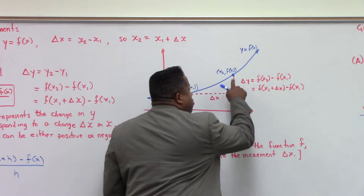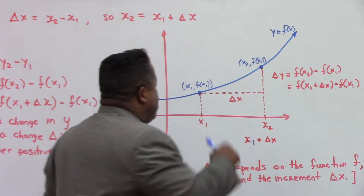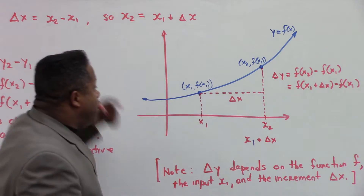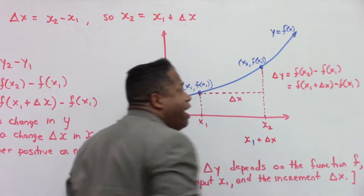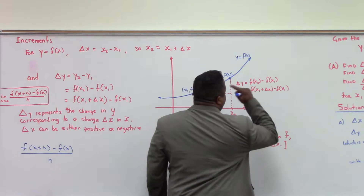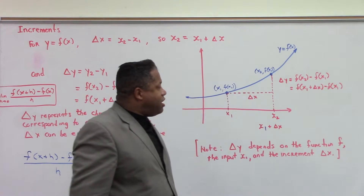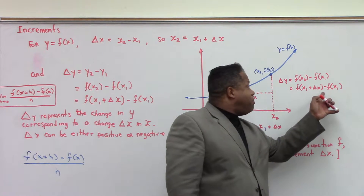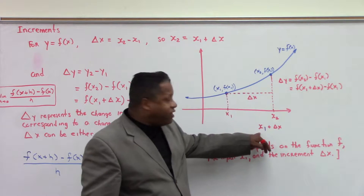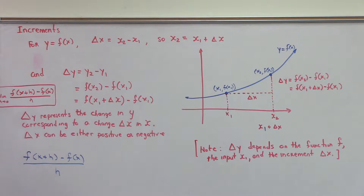Then we go to f of x₂ and we have some value output of f of x₂. We draw the line through the curve, and this is represented by y is equal to f of x. We see the change of y over the change in x, and this is how the graph would actually look.